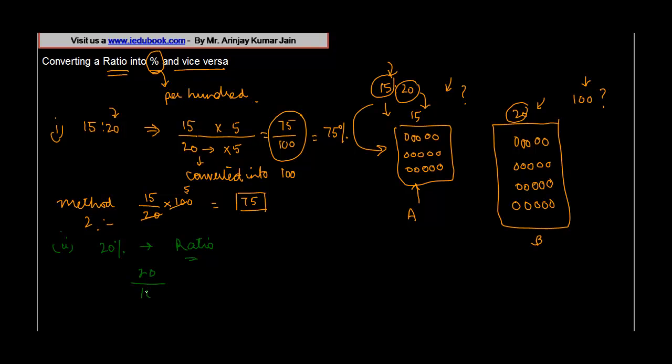Or simply write it as 20 by 100. 20 will go into 100 how many times? 5 times. So this will become 1 is to 5, the numerator is to denominator. Try out some more examples on your own.